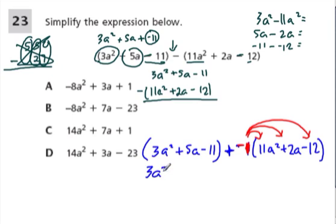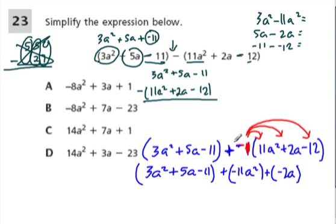And that'll help us because what we get next is we write this: 3a squared plus 5a minus 11 plus negative 11a squared. I distributed that negative 1, and then negative 1 times 2a is negative 2a. I'm going to add that as well, always to try and add. And then negative 1 times negative 12 is positive 12, so I'm going to add 12. And what I've done now is I have everything in terms of addition, so I can just start grouping these terms to solve.